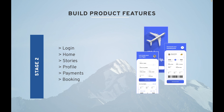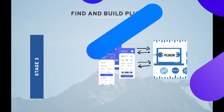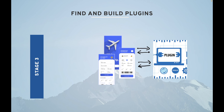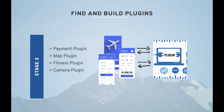Stage three is building or finding plugins. You have to make sure you have all the required plugins, and if a plugin doesn't exist you have to build it yourself. Examples include payment plugins, map plugins, fitness plugins, camera plugins, and video plugins.